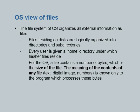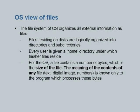Files residing on disks are organized into directories and subdirectories. Every user is given a home directory. For the OS, a file contains a number of bytes which is the size of the file. A .cpp file implies a C++ program; a .txt file implies text data. However, the logical interpretation of what is inside the file is left to the programs which either create or process that file.